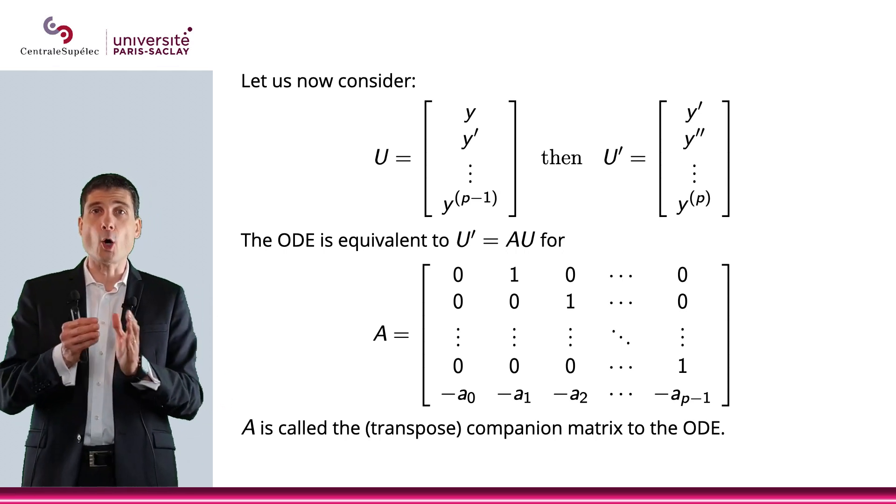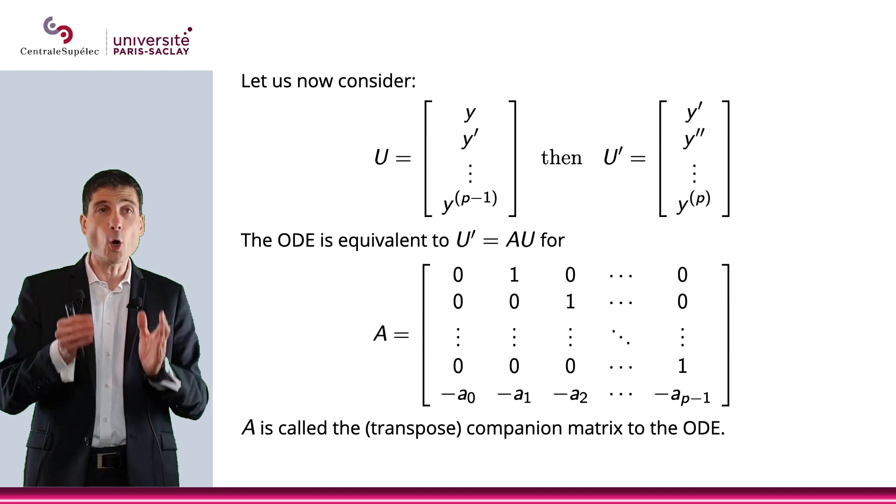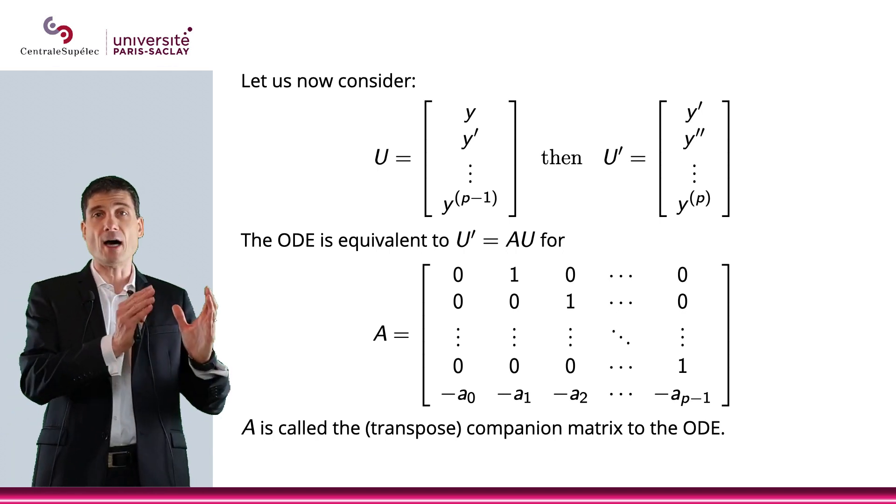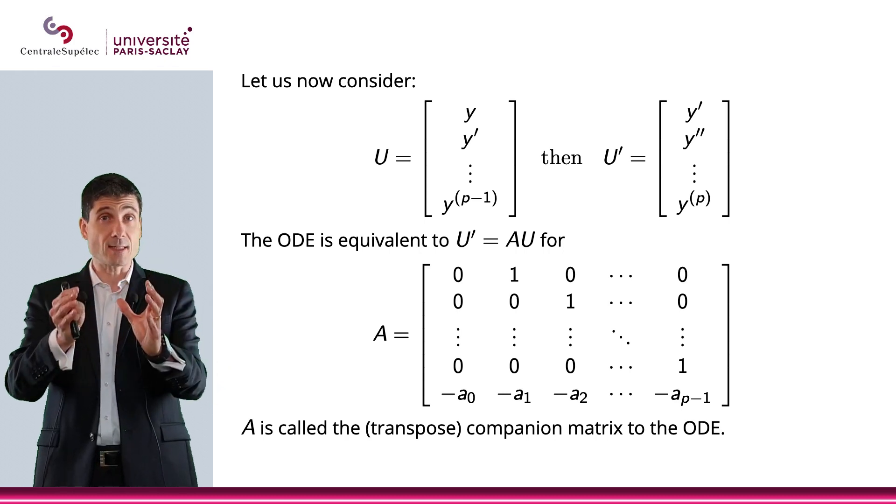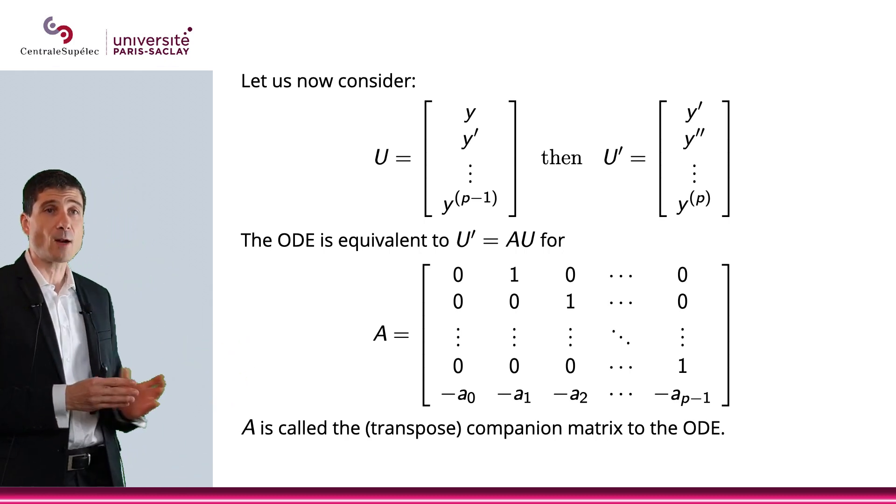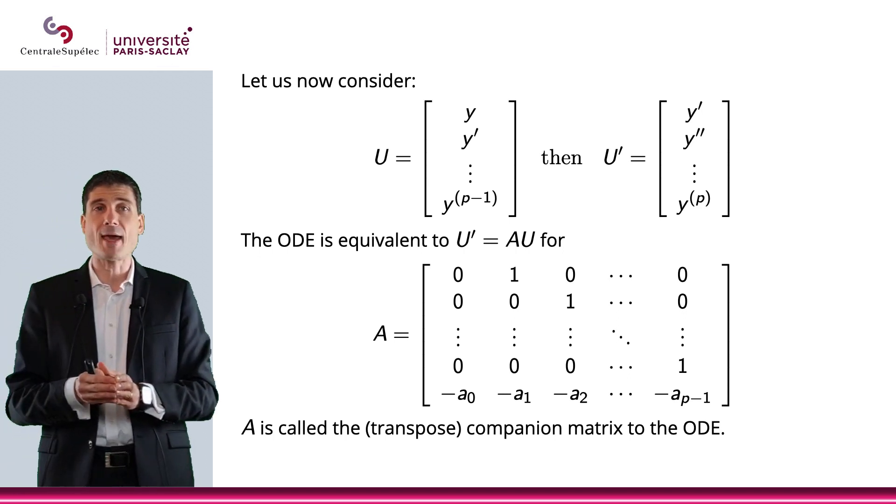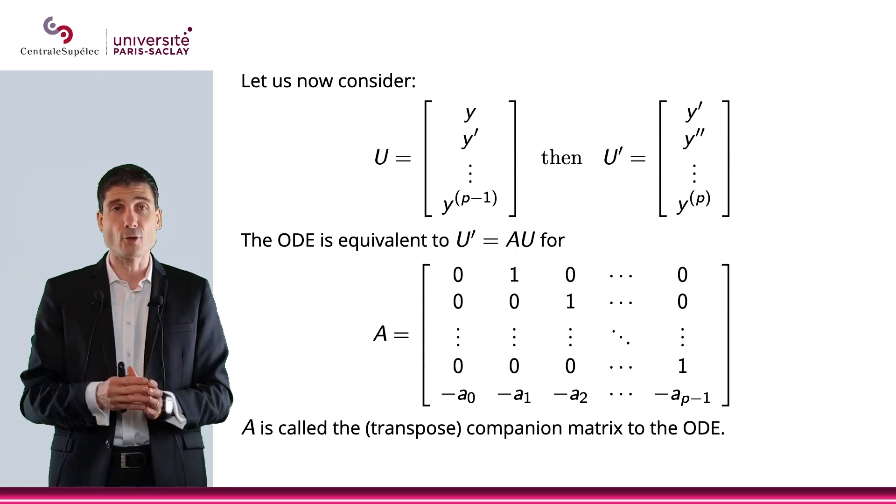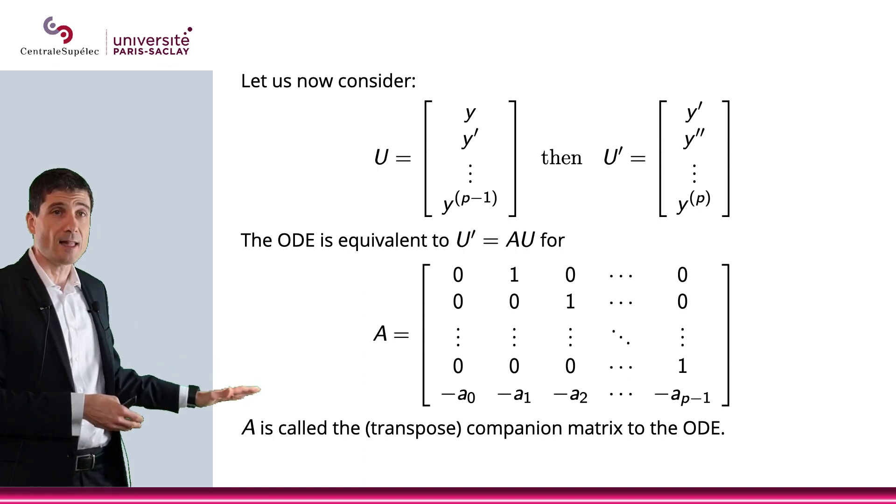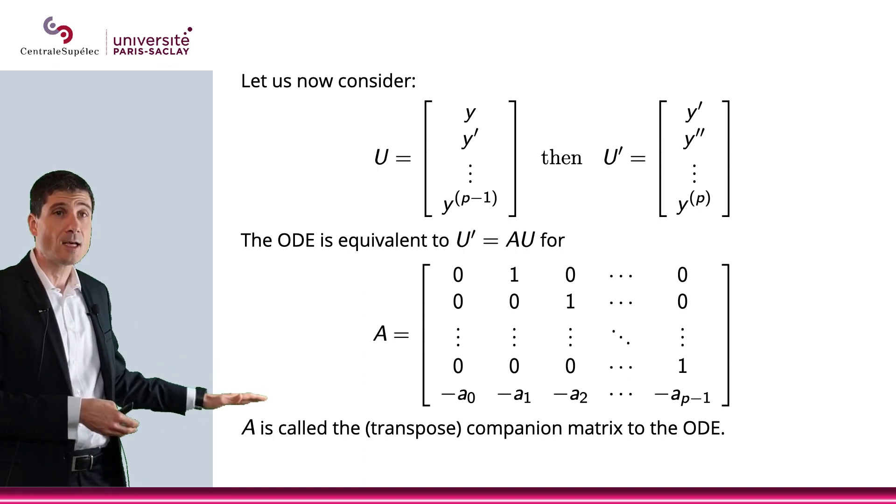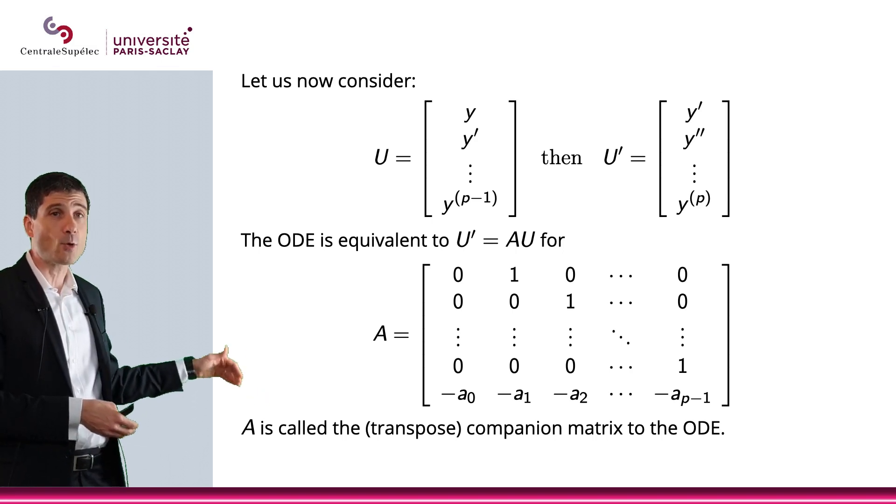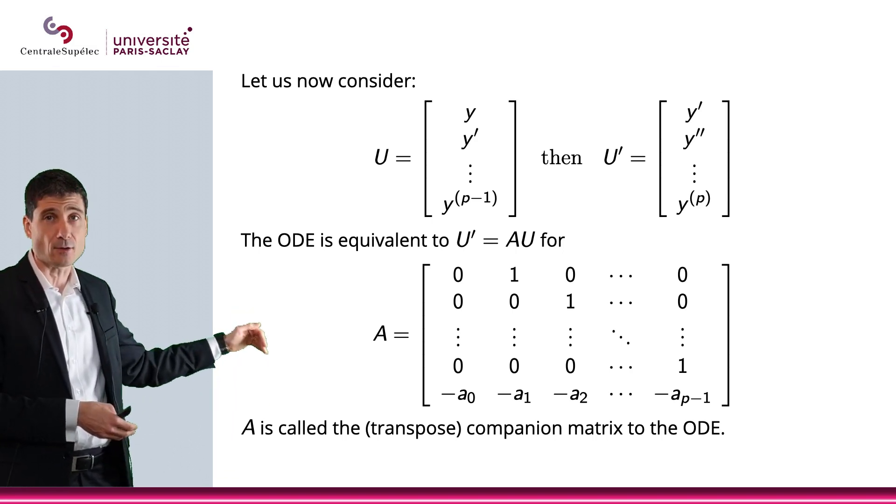Now, if you look at the ODE, then the ODE will be equivalent to u' equals a matrix times u. And the matrix here will be called the transposed companion matrix to the ordinary differential equation. It's basically at the very last line you get all these coefficients with a negative sign, and then you get one above the diagonal.